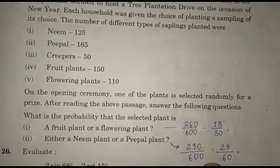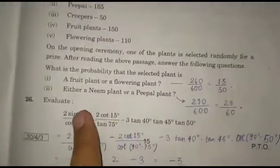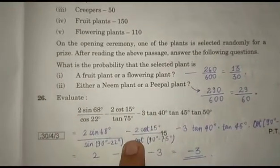Next we have a question from trigonometry: evaluate 2 sin 68° / cos 22° - 2 cot 15° / tan 75° - 3 tan 40° / cot 50° + tan 45°.